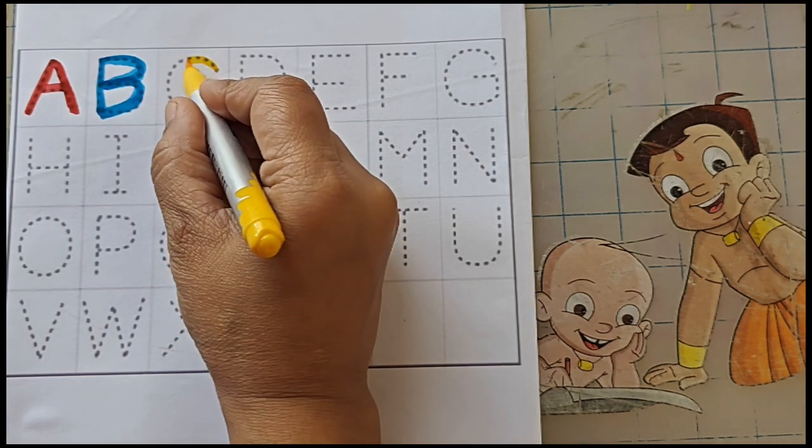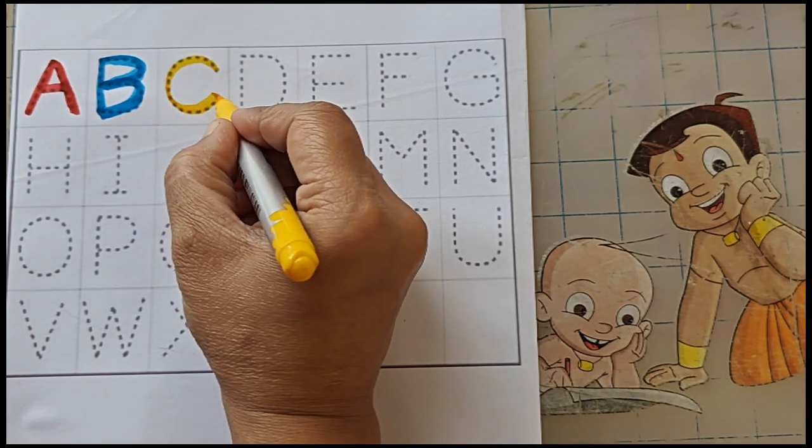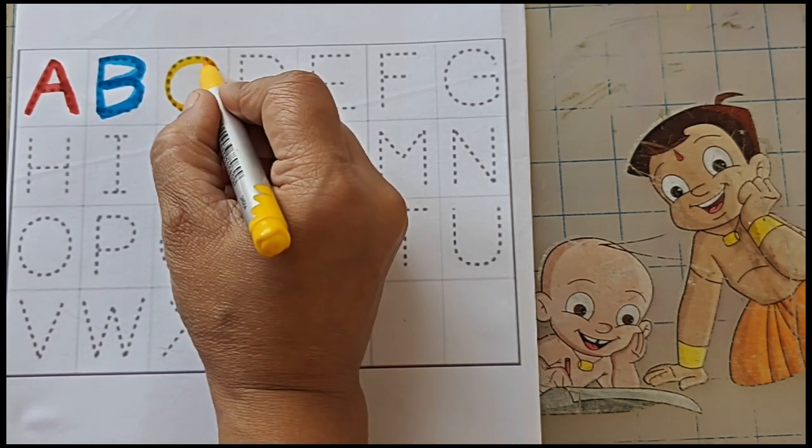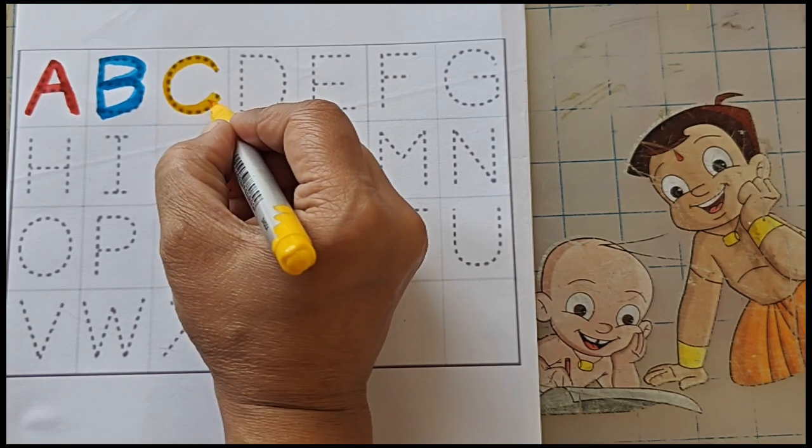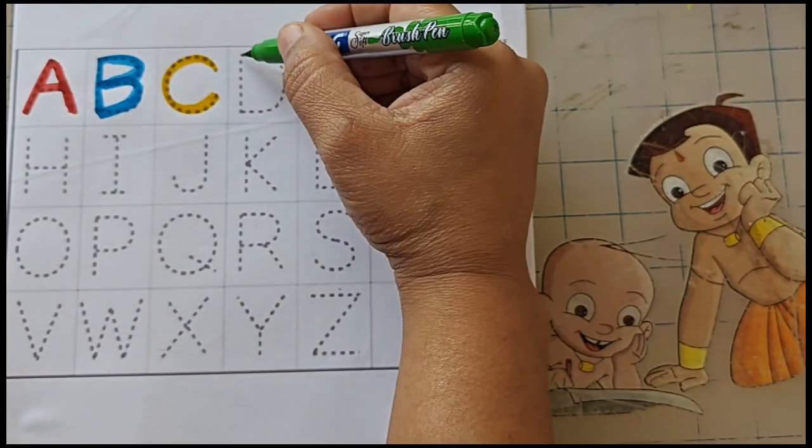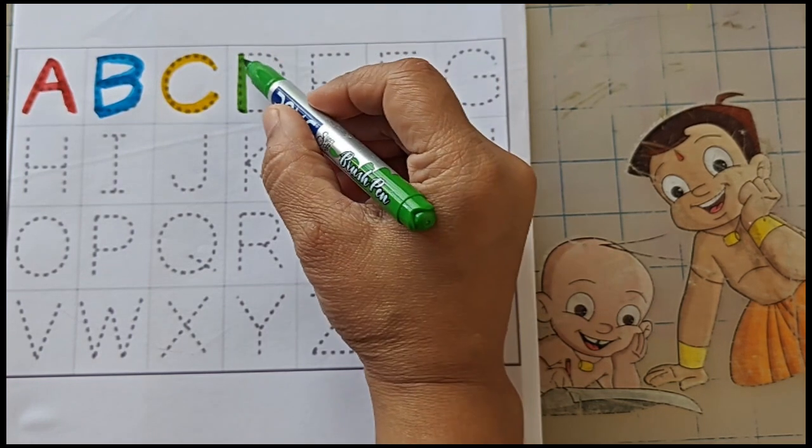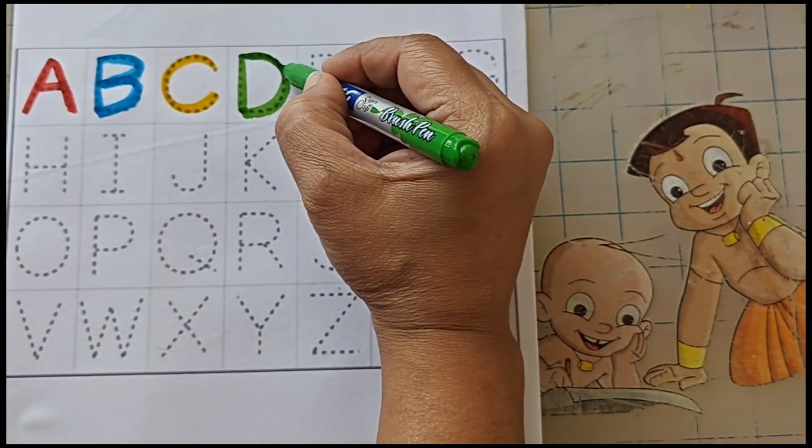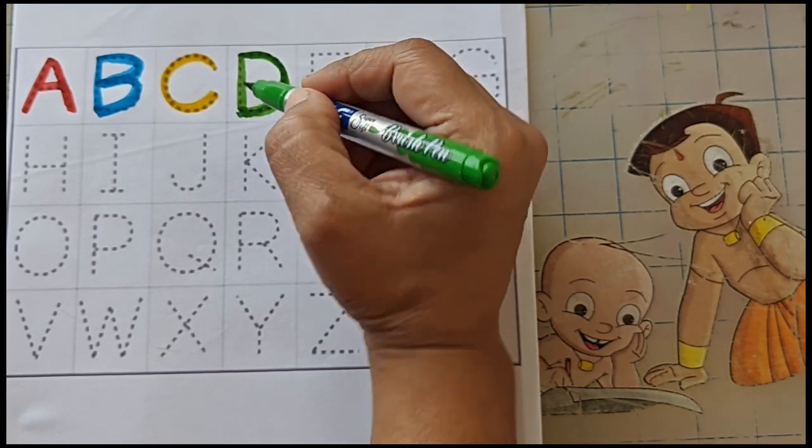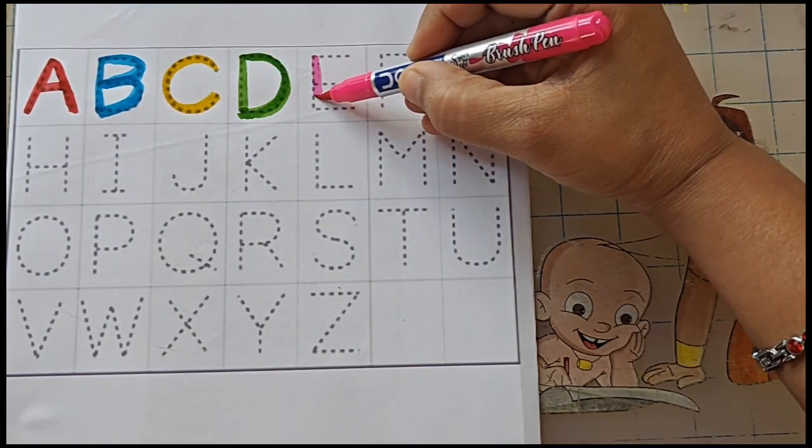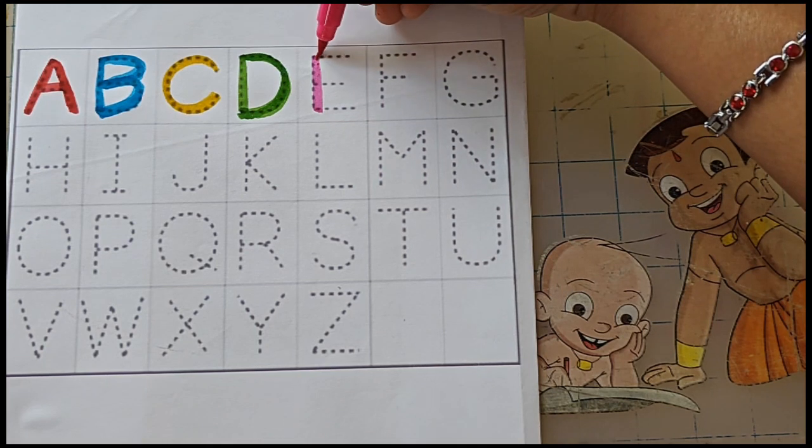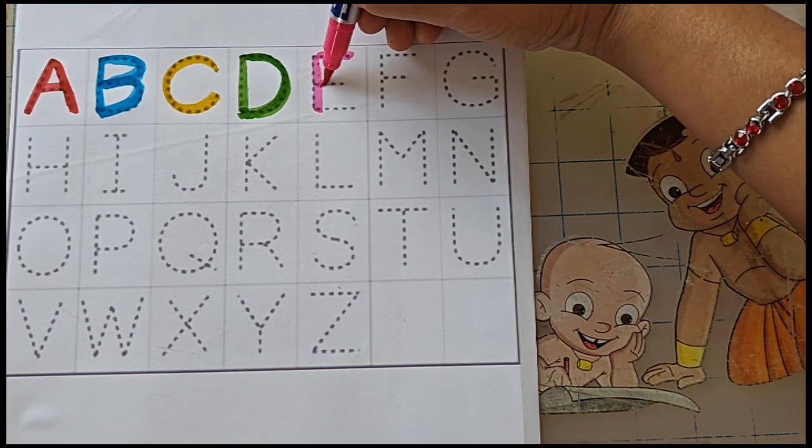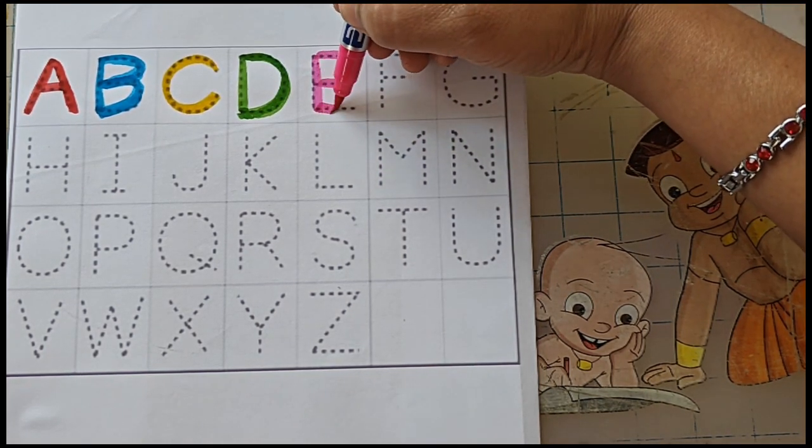C, C for car. C, C for computer. D, D for drum. D, D for doll. E, E for elephant. E, E for egg.